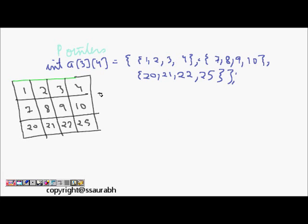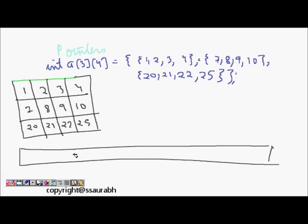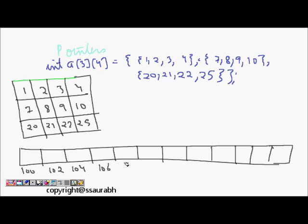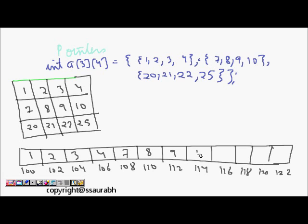But this is how we see it — in the computer, we have just one long linear memory. So the memory layout starts from address 100, with 2 bytes per integer: 100, 102, 104, 106, 108, 110, and so on. The values stored are 1, 2, 3, 4 in the first row; 7, 8, 9, 10 in the second row; and 20, 21, 22, 25 in the third row.